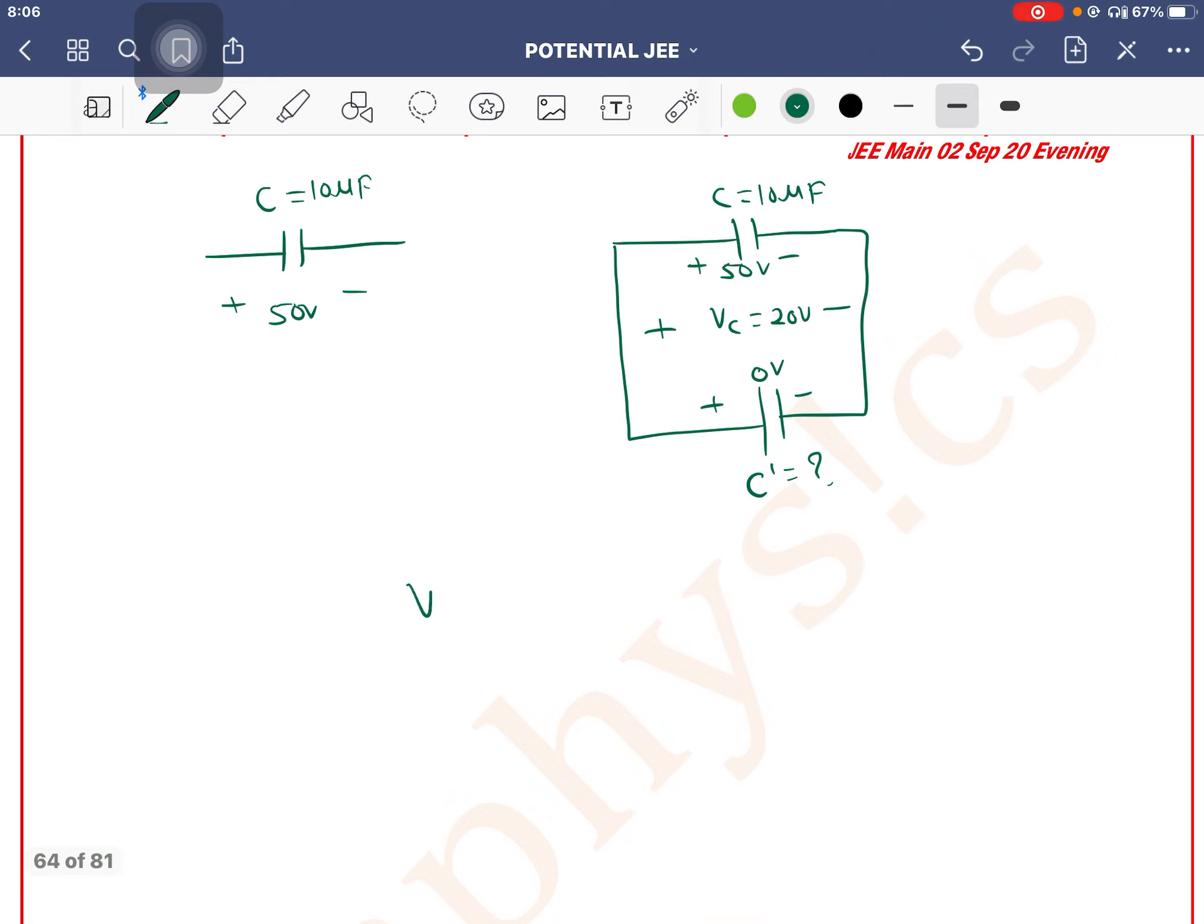This is a common potential question. What's the formula for common potential? C1V1 plus C2V2 divided by C1 plus C2.